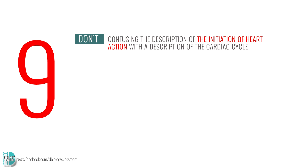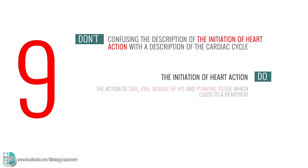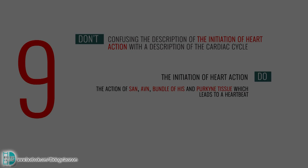Number 9: confusing the description of the initiation of heart action with a description of the cardiac cycle. When asked to describe the initiation of heart action, you should talk about the action of the SAN, AVN, bundle of His, and Purkinje tissue, which leads to a heartbeat.